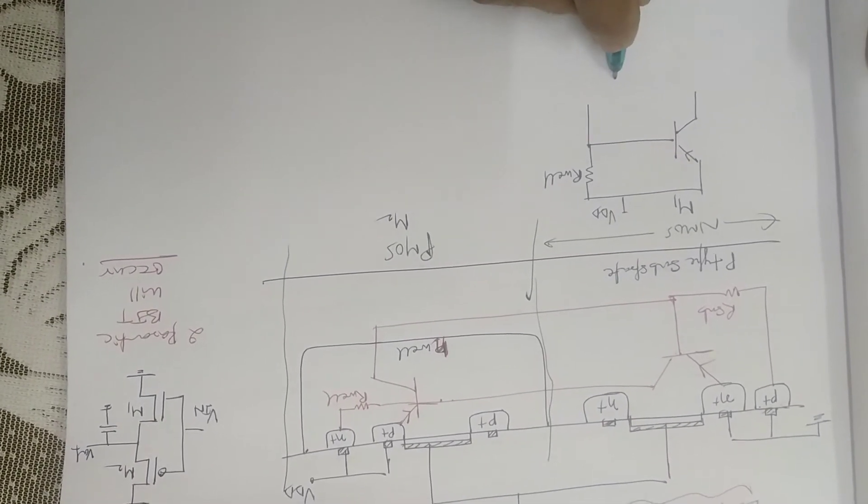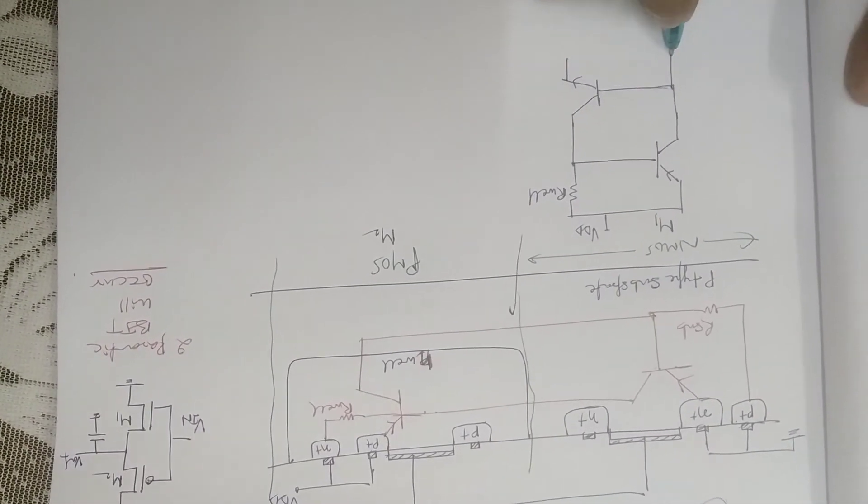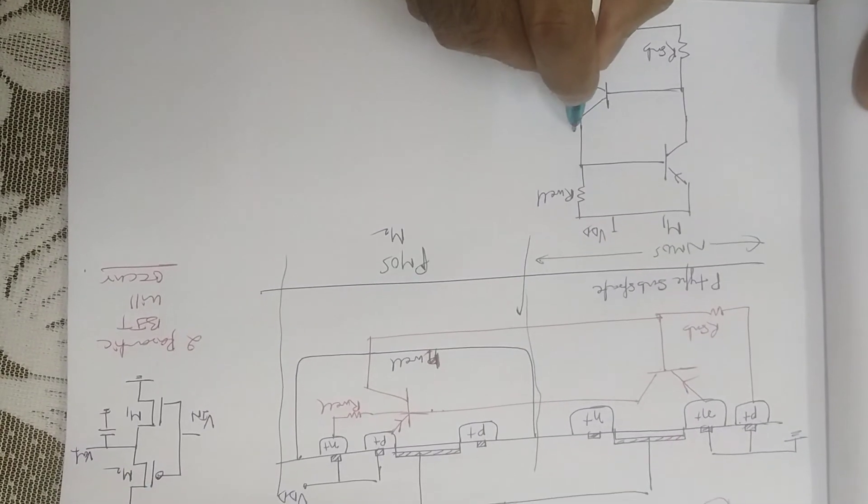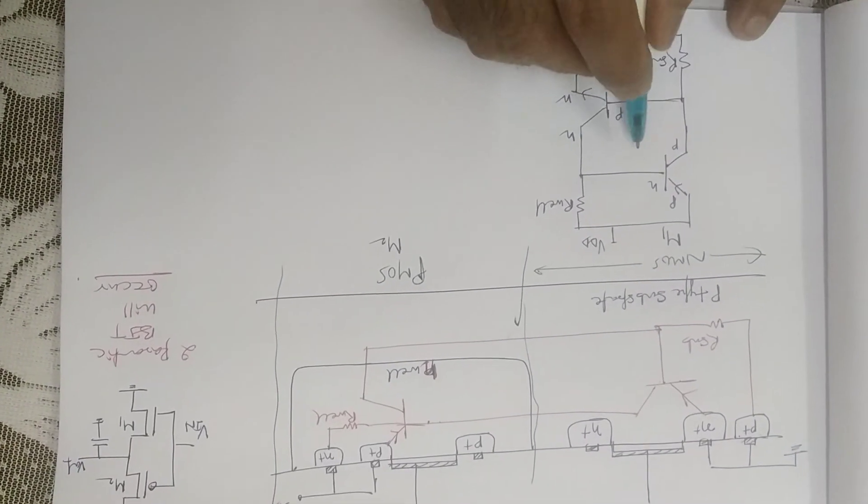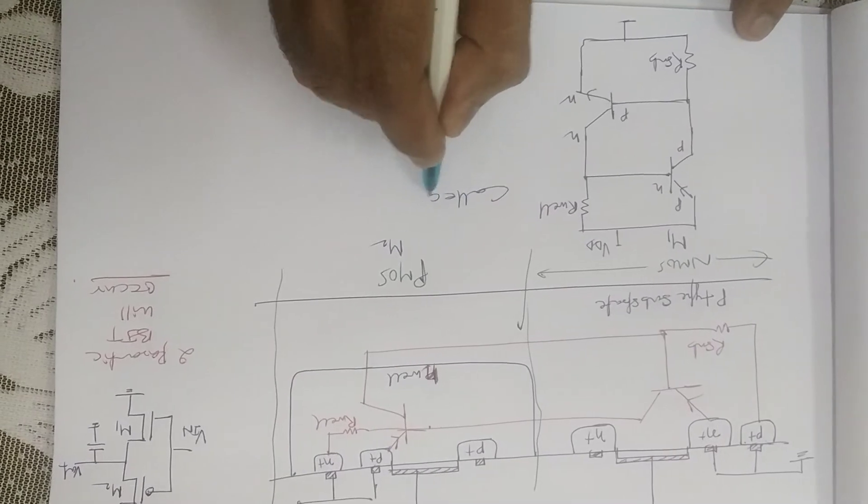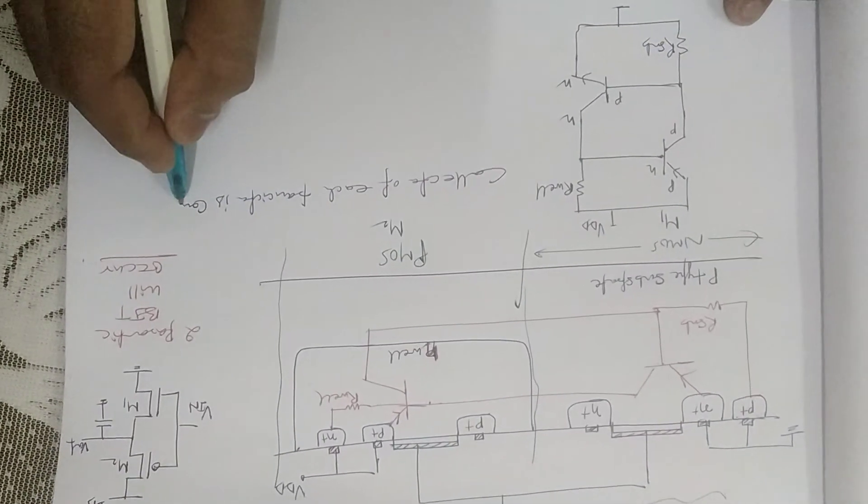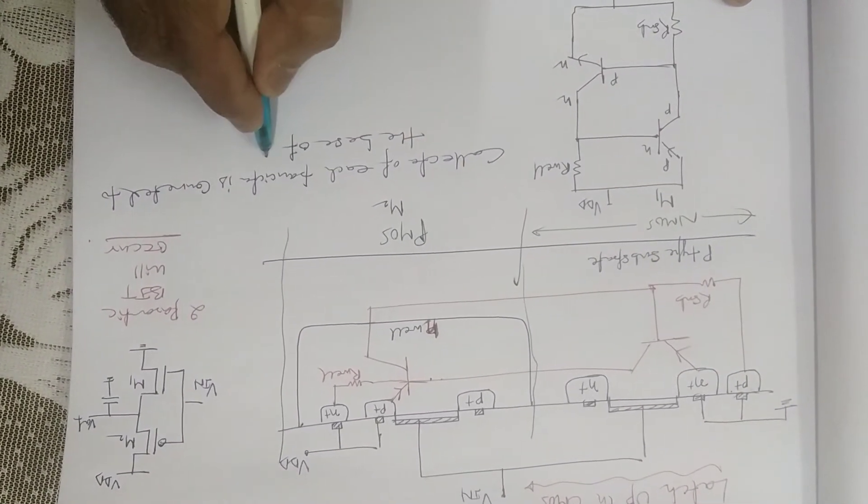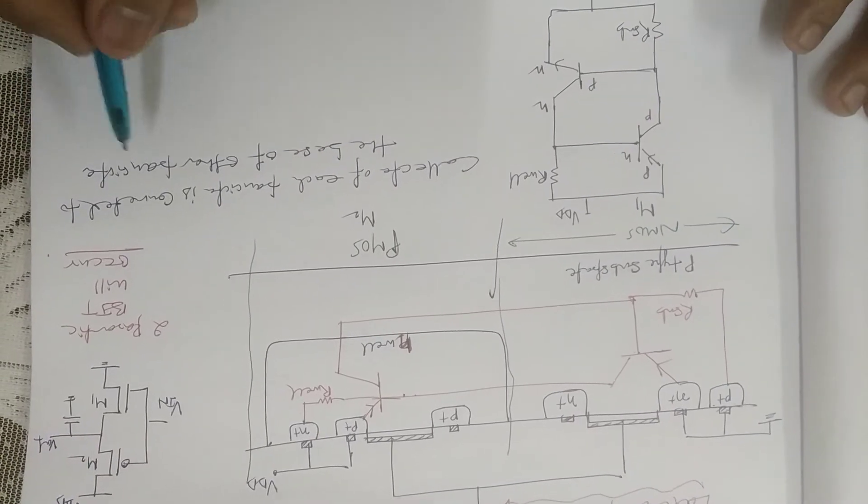The another transistor is your NPN transistor. So this one is your N-P-N transistor, PNP. An interesting fact is that the collector of one transistor is connected to the base of the other transistor. So this one is the diagram.